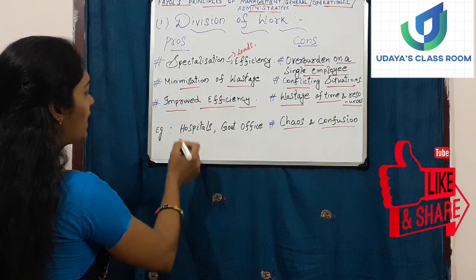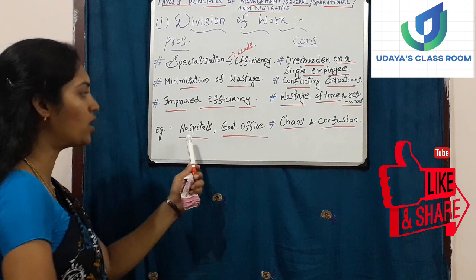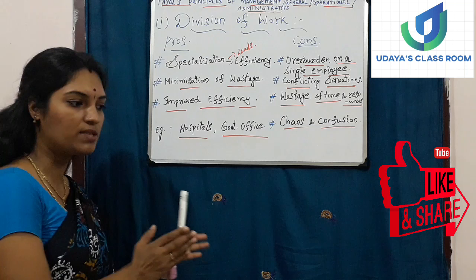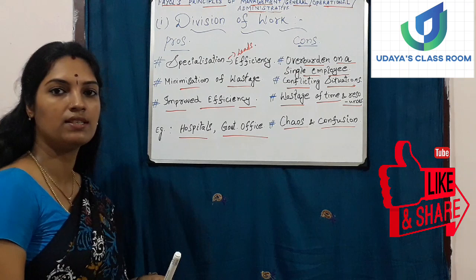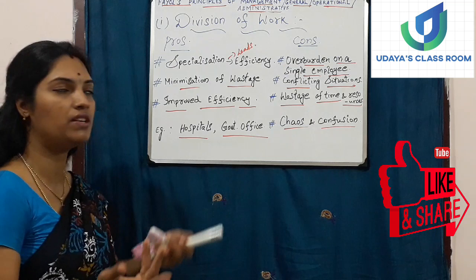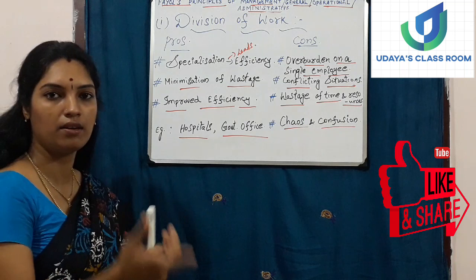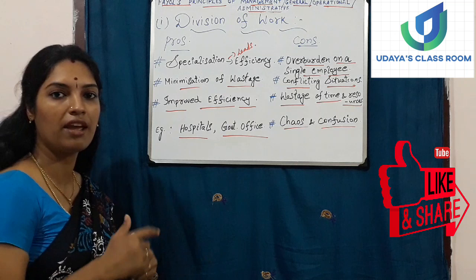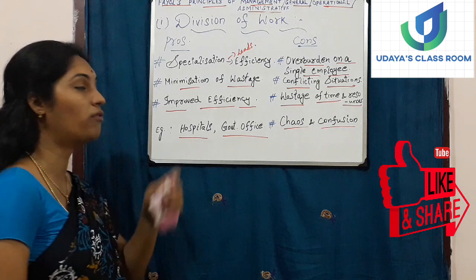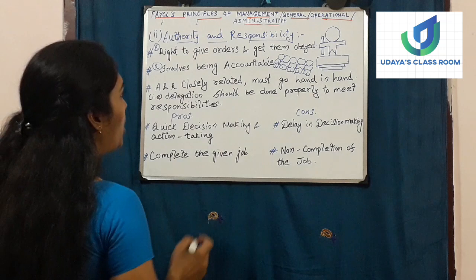We can observe this in hospitals and government offices. In a hospital, the person preparing bills does the same work continuously, and the person maintaining the register does the same work continuously — department-wise, everyone does the same work. In a government office, the clerk does the work allotted to them, and the officer does the work allotted to them. The same people doing the same particular work brings efficiency to that person. These are the pros and cons of Division of Work.